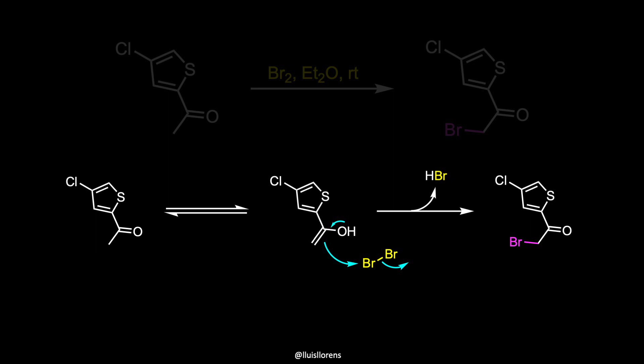The reason why the alpha position to the carbonyl group in a ketone is easily halogenated is the keto-enol tautomerism. The enol, or the enolate form of the ketone, attacks the halogen, and the newly introduced halogen decreases the basicity of the carbonyl oxygen while making the remaining hydrogens more acidic.